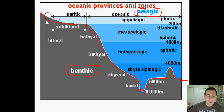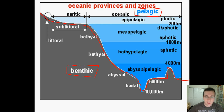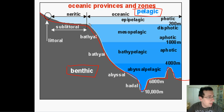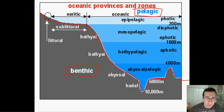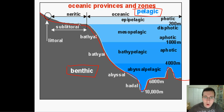Then you have the sublittoral zone, which sits right on top of the continental shelf. It is constantly hit by sedimentation and runoff from the continents, so it's going to have a lot of nutrients. You will find a lot of life in these areas — this is perhaps the richest of all the benthic zones. There is also a special ecosystem present in some areas of the sublittoral zone.